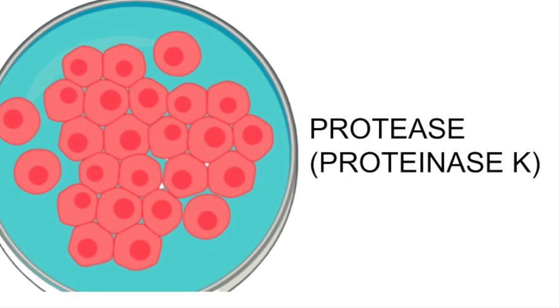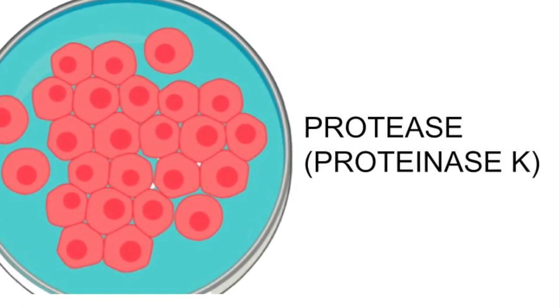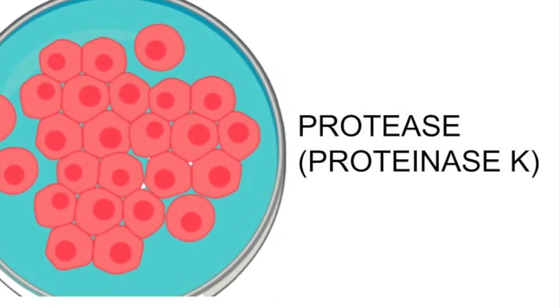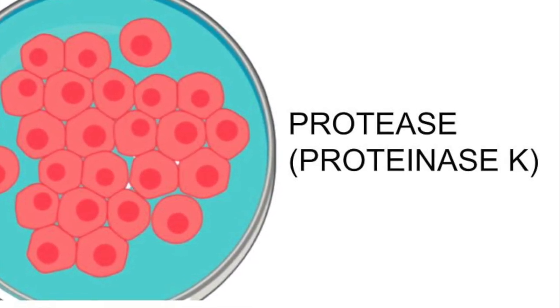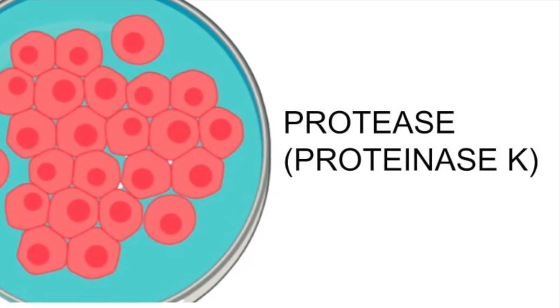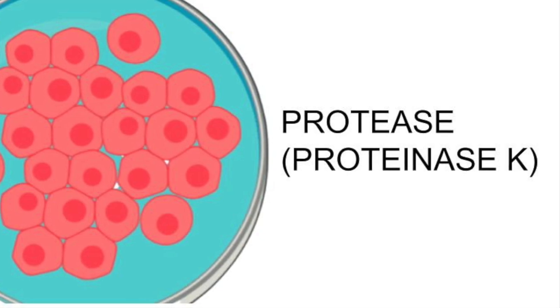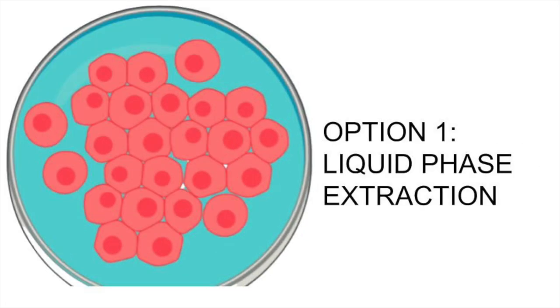Proteases are enzymes that degrade proteins, and you also heat the lysate so that the proteins denature and become single threads of amino acids. In this process, a reagent such as chloroform may be added for what is termed as a liquid phase extraction.